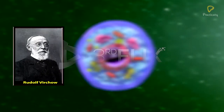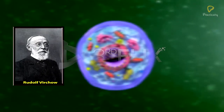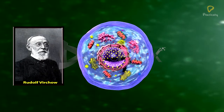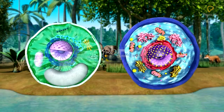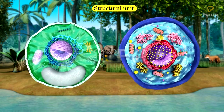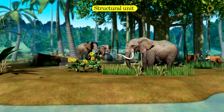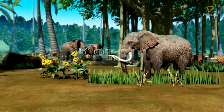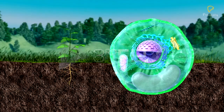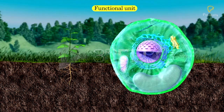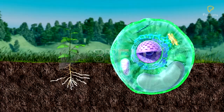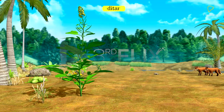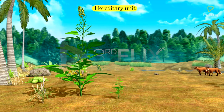Rudolf Virchow modified the cell theory. Cell is the structural unit of all living organisms. Cell is the functional unit of all living organisms. Cell is the hereditary unit of all living organisms.